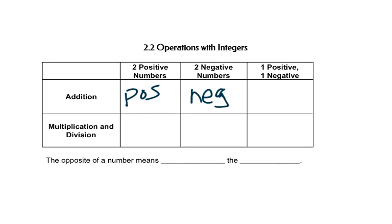If you add a positive and a negative, it depends on which number is bigger — you get the sign of the bigger number.